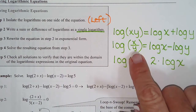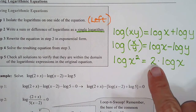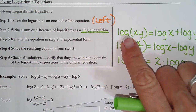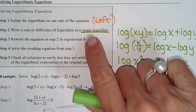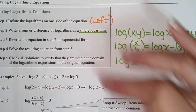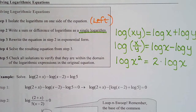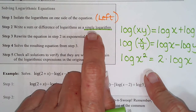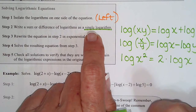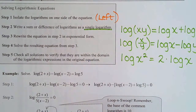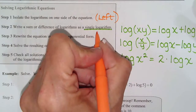Subtraction we turn into a single log of division. And if there's a number out in front, we put it up as a power. When we were expanding, we went from one form to the other. But this section wants us to write as a single log, so we're doing all these properties backwards. Step 1: all the logs on the left. Step 2: using the three properties, write your left side as a single log. Step 3: write in exponential form — this is what we called loop and swoop in section 8.4.